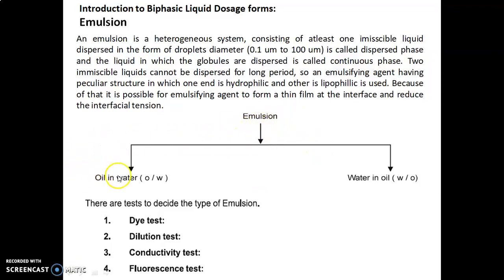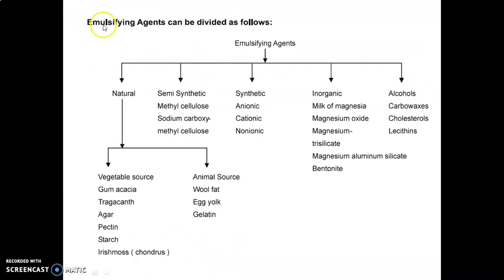The simple classification is oil in water (O/W type) and water in oil (W/O type). In O/W type, oil is the internal phase while water is the external phase. In W/O type, water is internal phase while oil is external phase. There are four tests to decide the type of emulsion: dye test, dilution test, conductivity test, and fluorescence test.